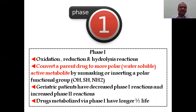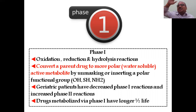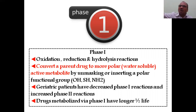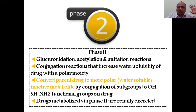In geriatric patients, Phase 1 reactions are decreased and Phase 2 reactions are increased. A simple way to remember: the older the patient, the more Phase 2 reactions. Drugs with a longer half-life will be excreted through Phase 1 reactions.